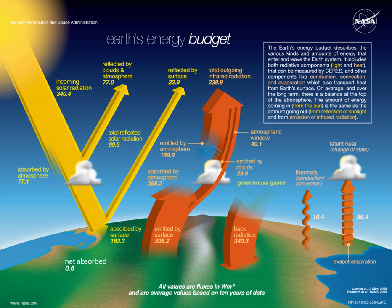100–140 TWh of the initial energy gets captured by photosynthesis, giving energy to plants. Other minor sources of energy are usually ignored in these calculations, including accretion of interplanetary dust and solar wind, light from stars other than the Sun, and the thermal radiation from space. Earlier, Joseph Fourier had claimed that deep space radiation was significant in a paper often cited as the first on the greenhouse effect.